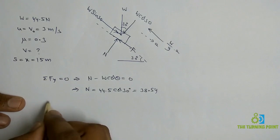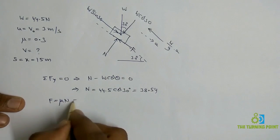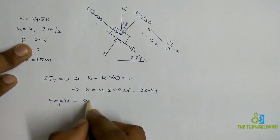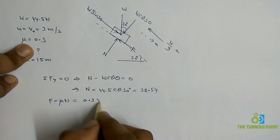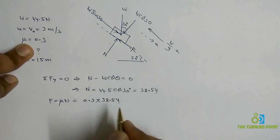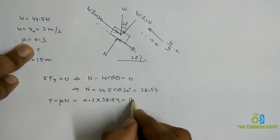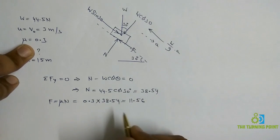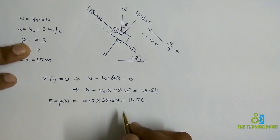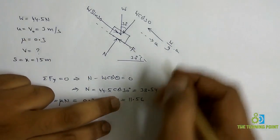We can now calculate the frictional force: F = μN, where μ = 0.3 and N = 38.54 Newtons. Simplifying, we get F = 11.56 Newtons. This is the value of the frictional force. Now consider σFx = 0.